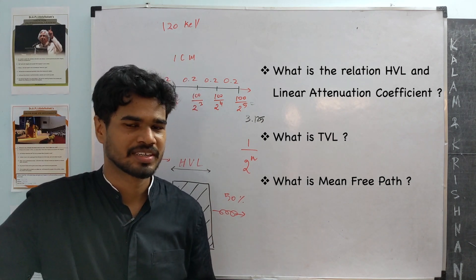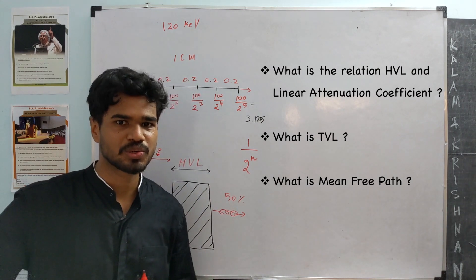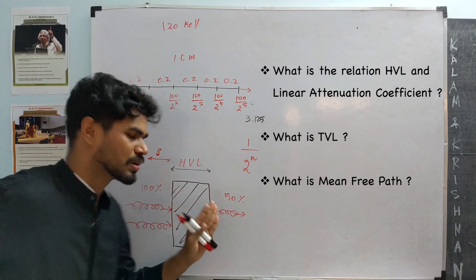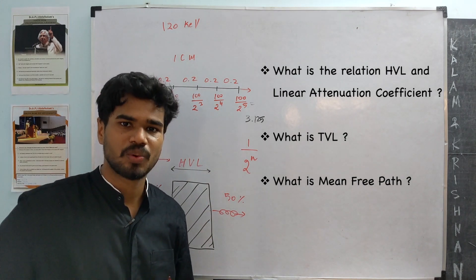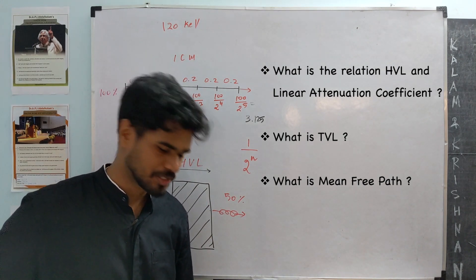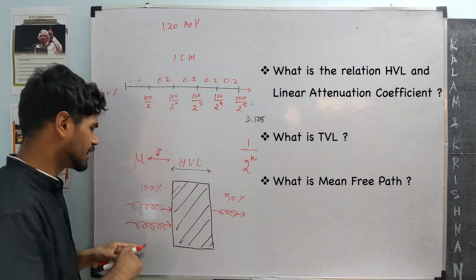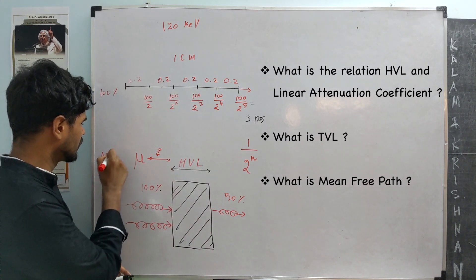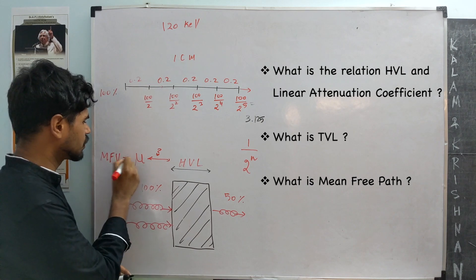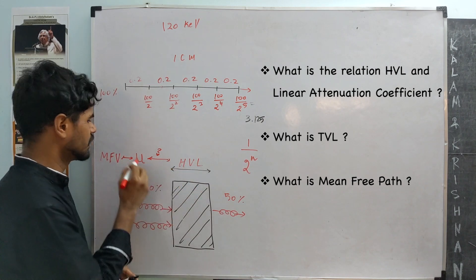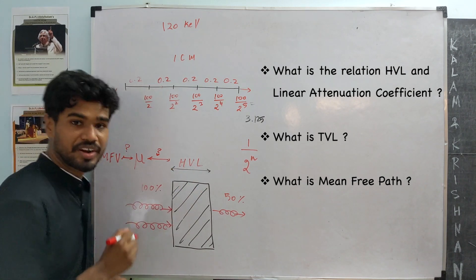And last question. There is another parameter used to describe attenuation of light passing through material that is known as the mean free path. How is the mean free path related to the attenuation coefficient and in turn to the half-value layer? Try to figure that one out.